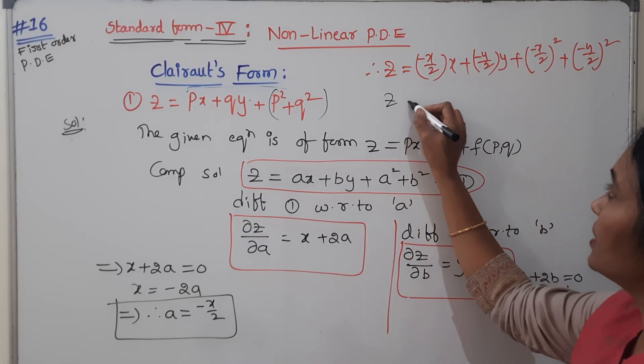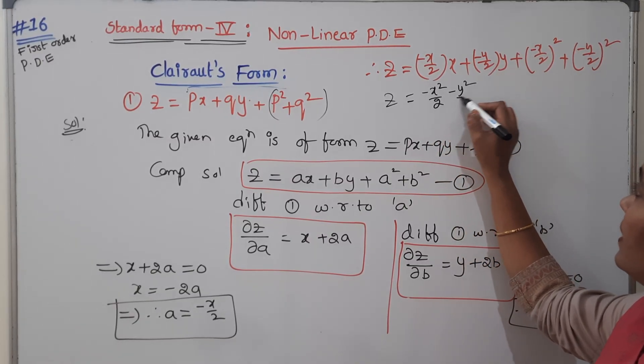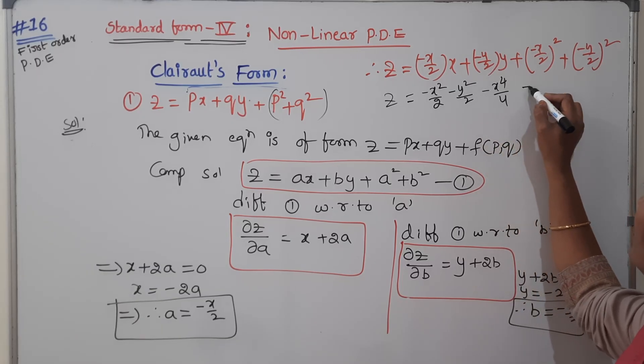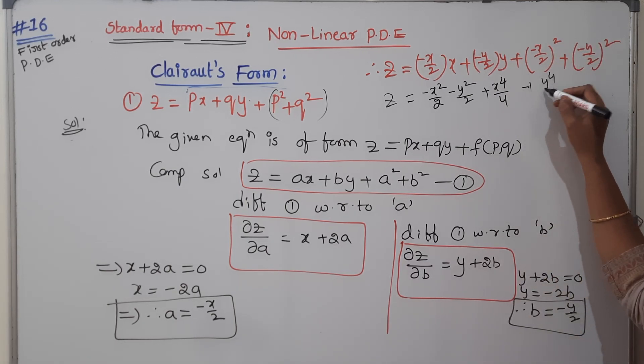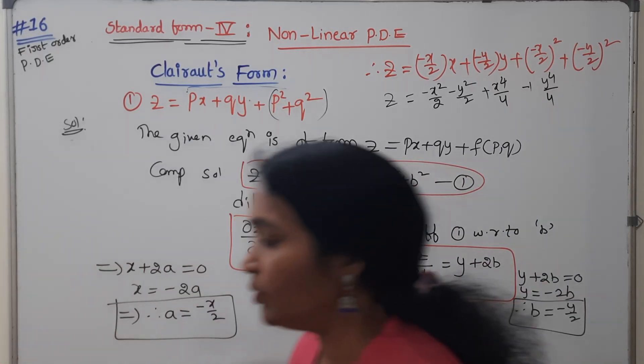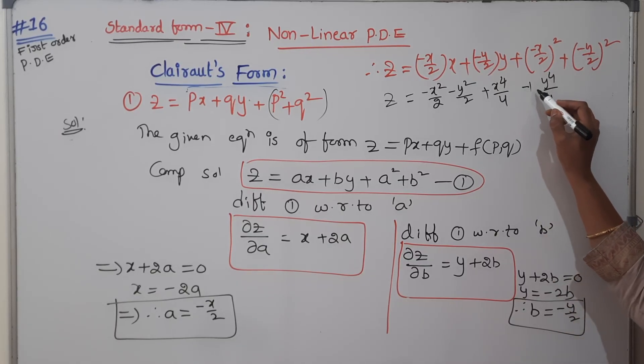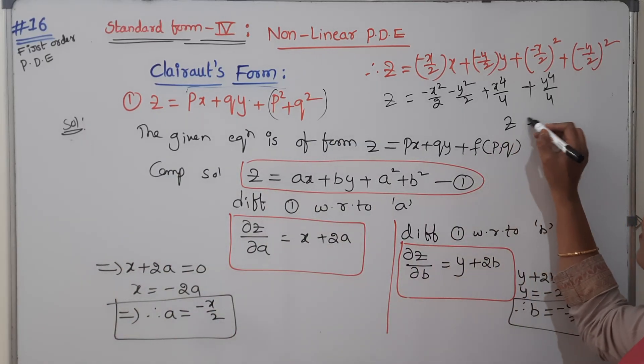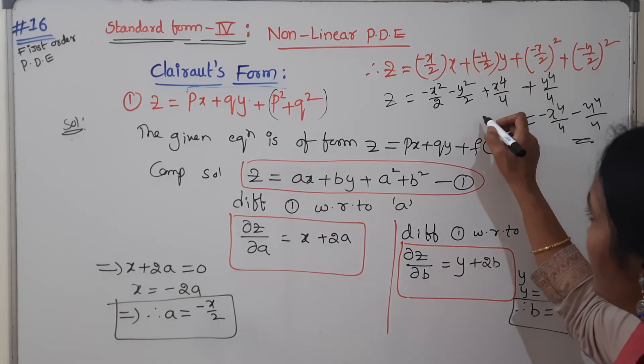Simplify this. You will get the general solution. This is minus X square by 2, minus Y square by 2, plus X square by 4, plus Y square by 4. After simplifying, I will get Z equals minus X power 4 by 4 minus Y power 4 by 4.